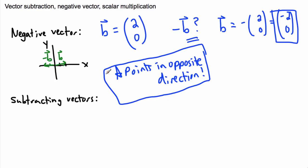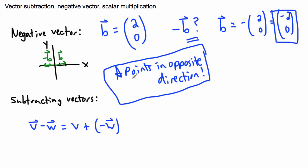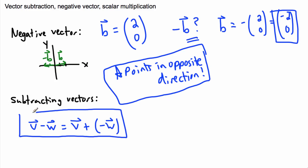So if we're going to subtract vectors, it might help to look at some of the notation we might use. Let's say I have two other vectors, v and w, and I want to subtract them. What I can do instead of actually subtracting vectors is I just add the negative vector. So throwing a negative in front of everything, I can just say that's v plus negative w. And this is how you subtract vectors — it's that easy.